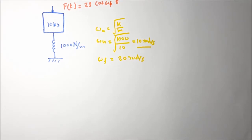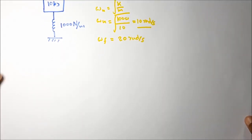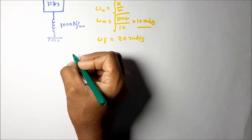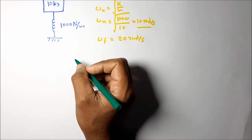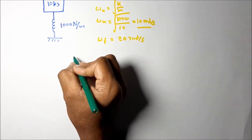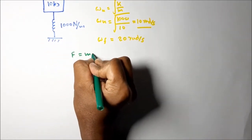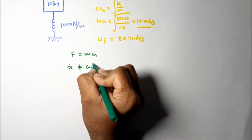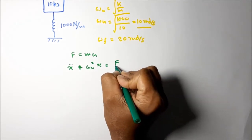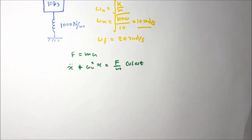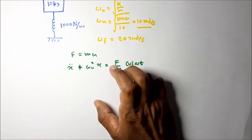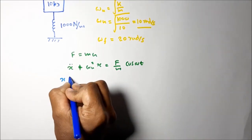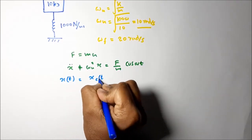The problem asks us to find the equation of motion for the system. For this kind of system, the equation of motion is a second-order differential equation with constant coefficients — a non-homogeneous differential equation. Applying F = ma and considering the motion of mass m, we get: x'' + ωₙ² x = (F/m) cos(ω t). This is the second-order non-homogeneous differential equation. The solution has two parts: the complementary function solution and the particular integral solution.